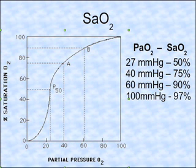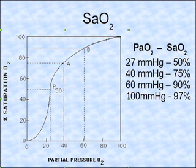This is fundamental information worth memorizing. SaO2 stands for the saturation of hemoglobin with oxygen, measured as a percentage. Because SaO2 depends upon PAO2, anything that affects PAO2 will potentially affect SaO2. There are some cases where PAO2 is not affected but SaO2 is — for example, in the case of a shift in the oxyhemoglobin dissociation curve: a left or right shift due to acidosis, alkalosis, temperature, and so on.